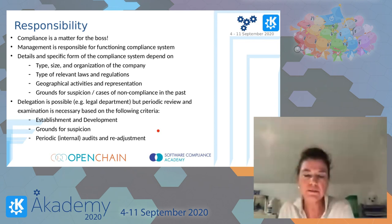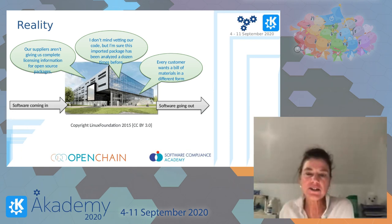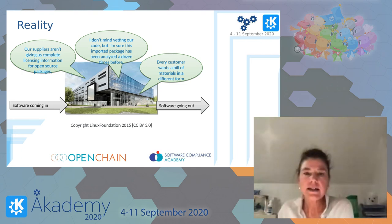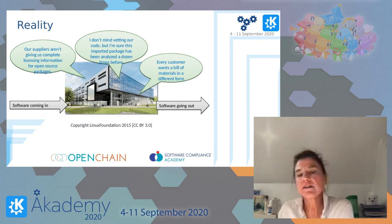This slide from the Linux Foundation shows the current status of the supply chain. Basically, suppliers are not really providing complete licensing information, and this information is not standardized in any way. When dealing with open source packages, the problem is that everything has probably already been analyzed by one of your suppliers — creating double effort. And depending on your customers, they want a bill of materials, but most customers have their own way of asking for it, so there's no standardized approach.